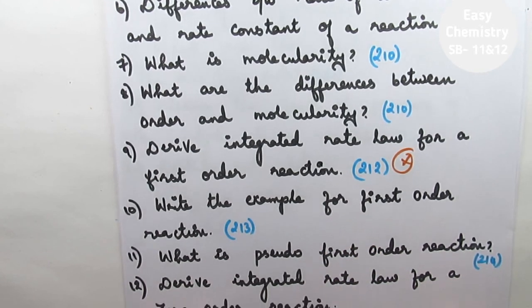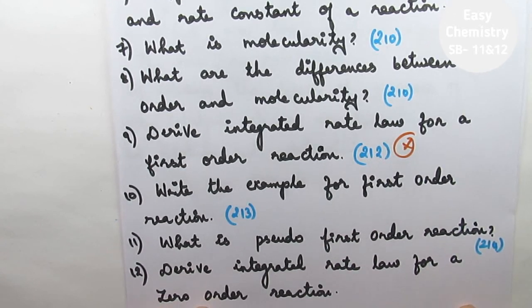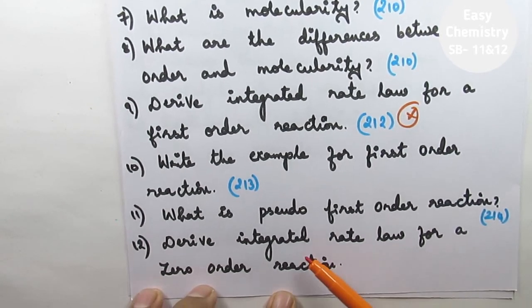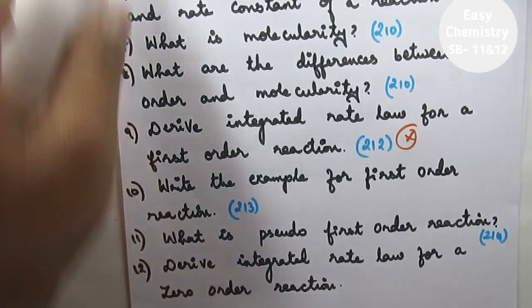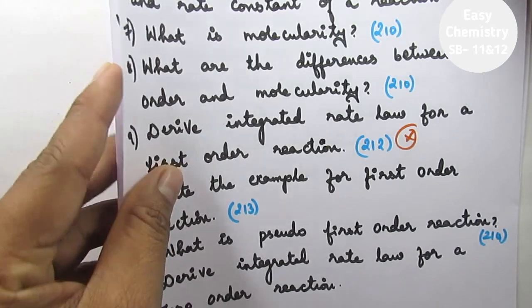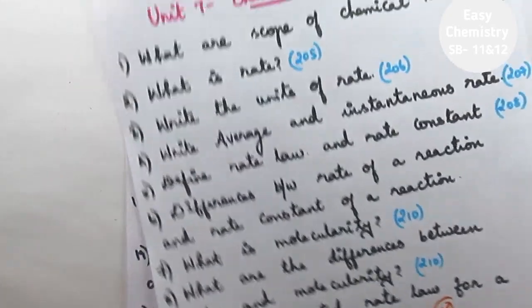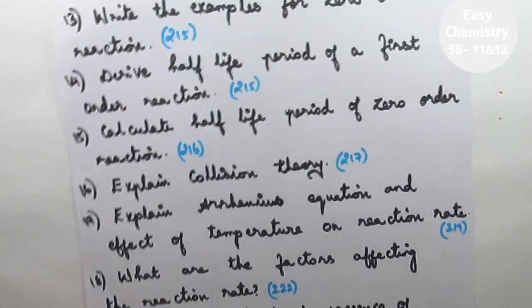Let's look at the examples in the book. Let's look at question number 11, what is pseudo first order reaction? Question number 12, derive integrated rate law for a zero order reaction. Next question number 13, let's look at the lesson.